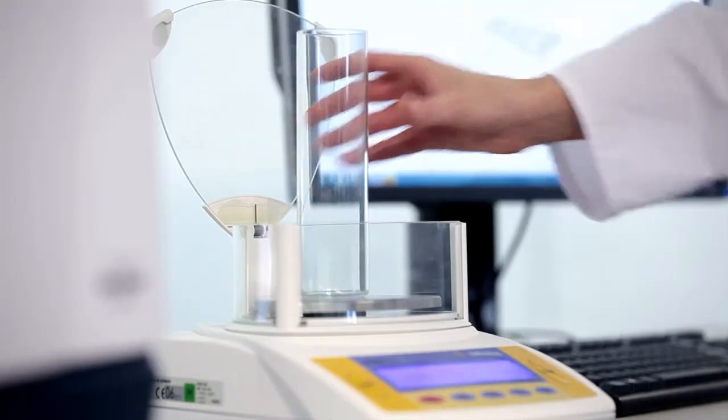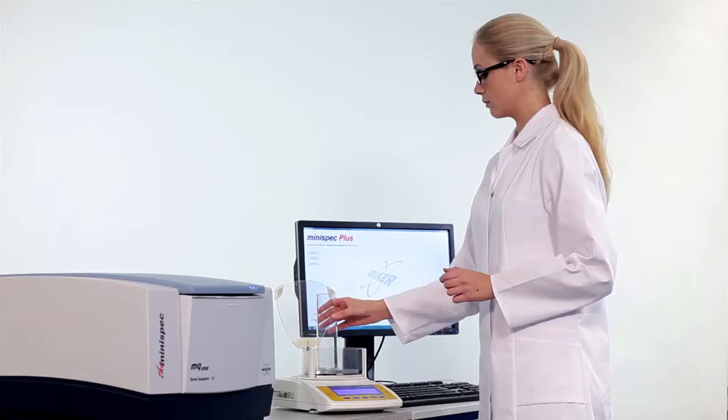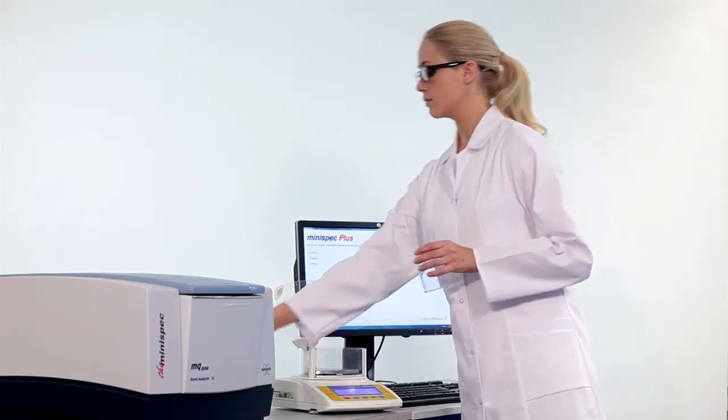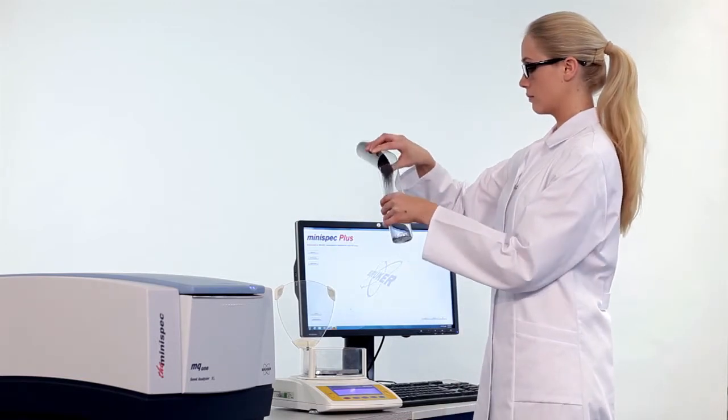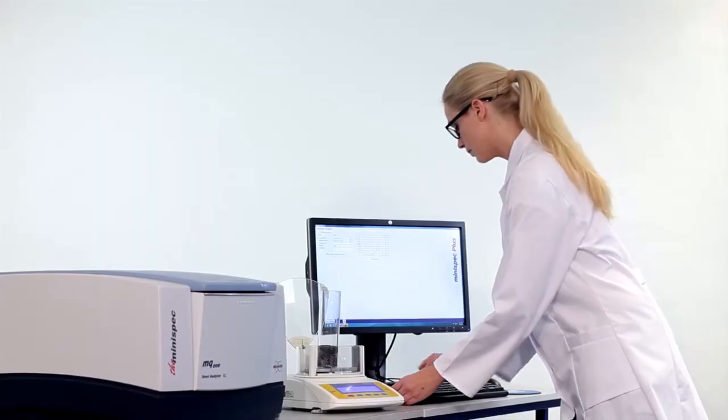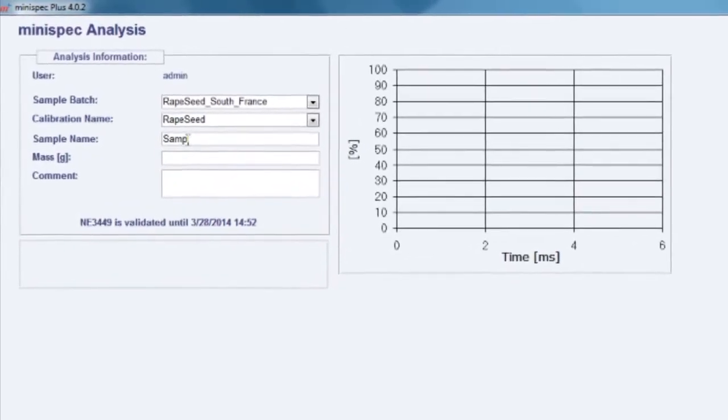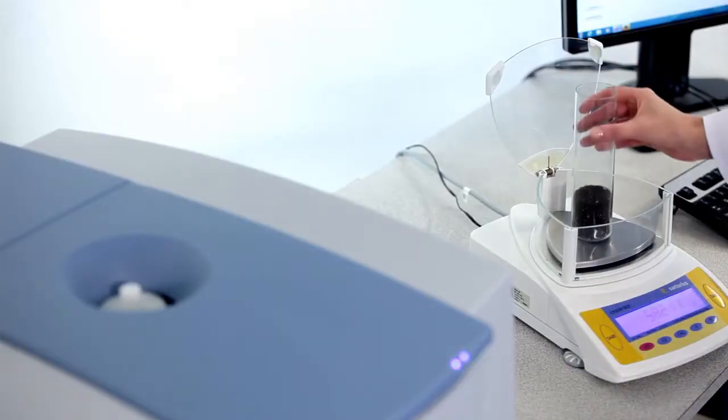No grinding, no solvent extraction, or sample preparation is required. The workflow for oil and moisture determination is simple: weigh the sample, transfer the weight to the PC, insert the sample tube into the minispec, and the measurement starts automatically by sample detection.